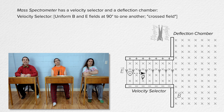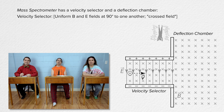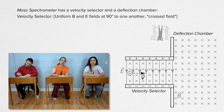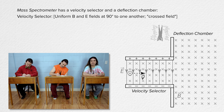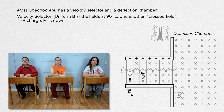The positive charge is moving to the right. It will experience a Coulomb force caused by the electric field. Because the charge is positive, the force from the electric field will be in the direction of the electric field. The positive charge will also experience a magnetic force caused by the fact it is moving through a magnetic field.